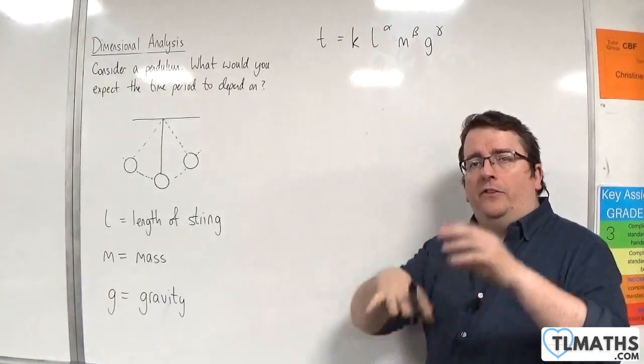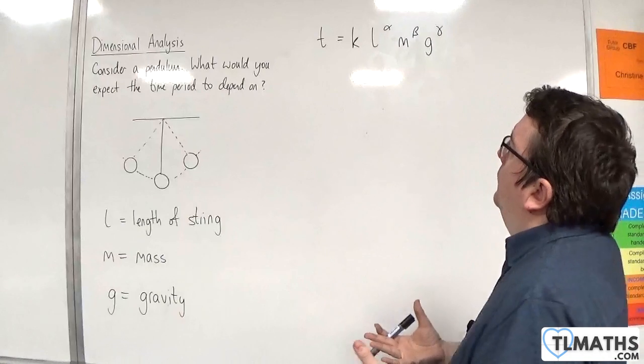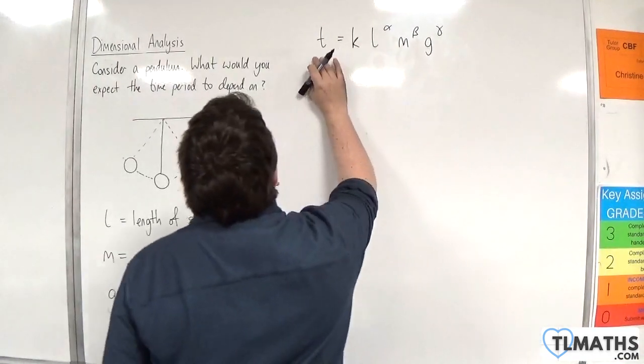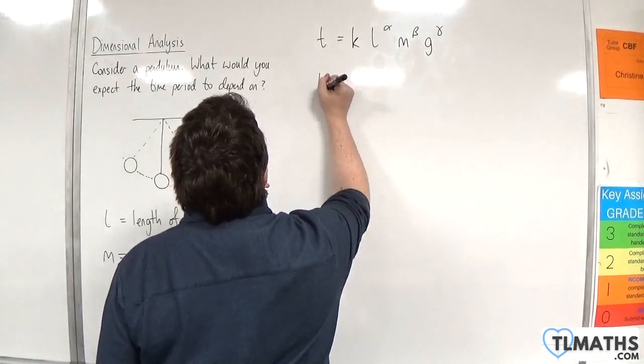What we'll do is we'll look at the dimensions of either side of this. So the dimensions of the left-hand side, time, would just be T.